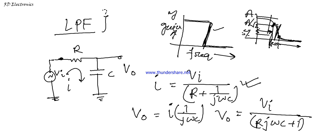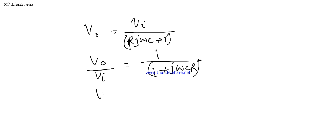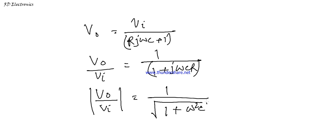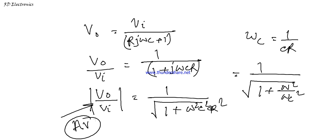So our main formula is V₀ = V_input / (RjωC + 1). Taking the magnitude, the gain expression becomes: |V₀/V_input| = 1 / √(1 + ω²R²C²). We define the cutoff frequency as ωC = 1/RC, so the expression becomes: |V₀/V_input| = 1 / √(1 + ω²/ωC²). This quantity V₀/V_input is also known as the voltage gain — output over input response.